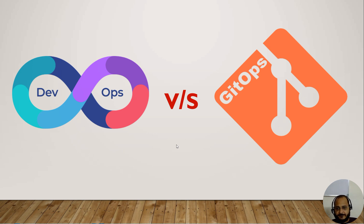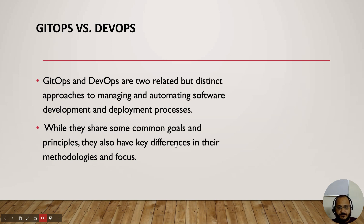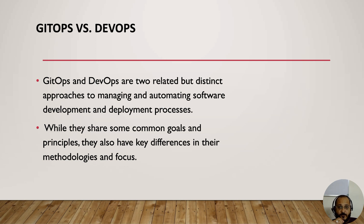GitOps and DevOps are two related but distinct approaches to managing and automating software development and deployment processes. They are very similar terms but follow different methodologies or approaches to achieve tasks like automation, deployment, or development. While they share some common goals and principles, they also have key differences in their methodology and focus.